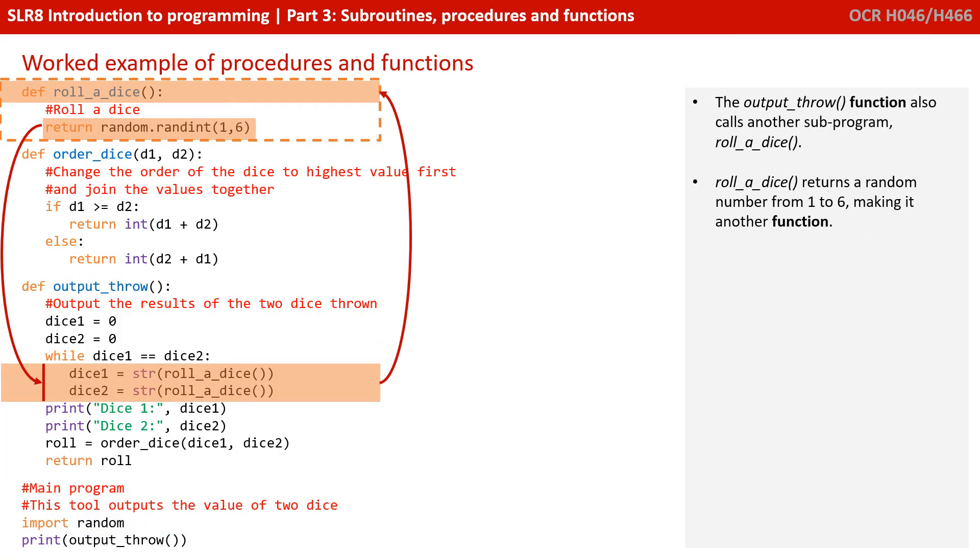You'll notice that as part of executing the function output throw, we also have a call to another subprogram, RollerDice. So again, we would jump off at that point to the subroutine RollerDice. And we can see again here that RollerDice returns a value, thus again making this a function.